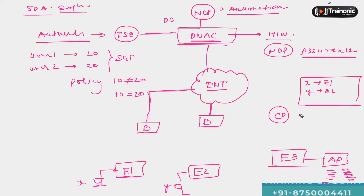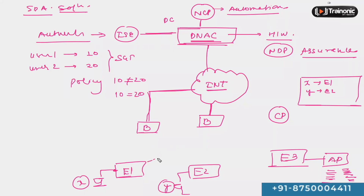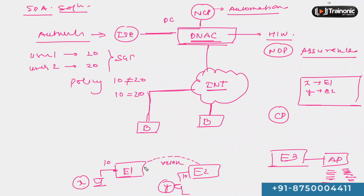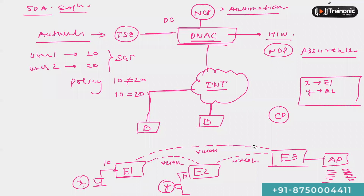The control plane device maintains a database keeping information about which endpoints are connected to which edge devices. If device X wants to communicate with device Y, a logical tunnel built between E1 and E2 based on the protocol VXLAN can be used to send the traffic. For endpoints in the same VLAN, tunnels can be built between edge devices. These are data plane tunnels — VXLAN tunnels. At the data plane, data is encapsulated with the VXLAN protocol.